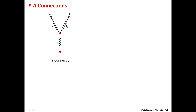The outer nodes are labeled as node A, B, C in the clockwise direction, and we have this intermediate center node. Those three resistors are not in parallel nor in series, because they are connected to some external connections to the Y connection.